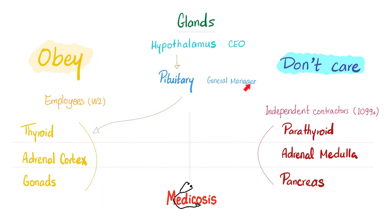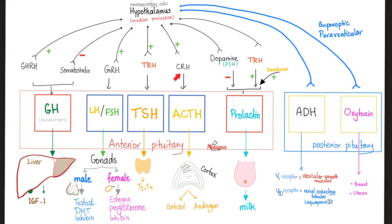Here is the CEO, followed by the general manager, and then the employees who listen to the manager, and the independent contractors who couldn't care less about that manager. The CEO is the hypothalamus, the manager is the pituitary. The employees that listen are the thyroid, adrenal cortex, and the gonads. But the pancreas is not under the influence of the pituitary — do you see the pancreas there? No.